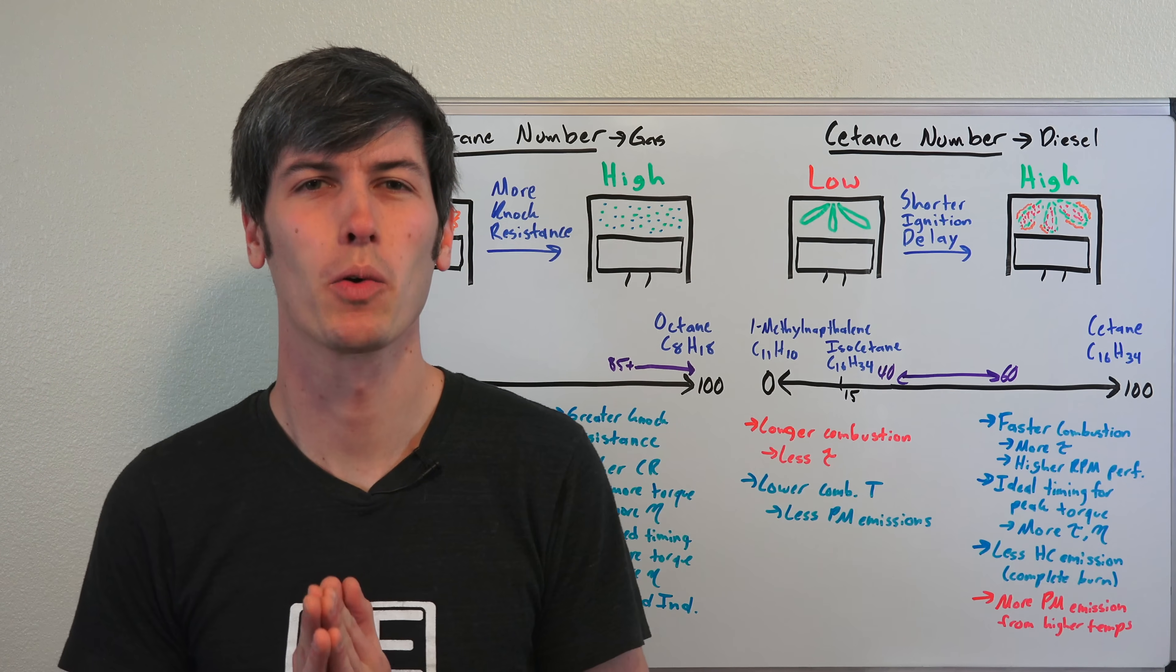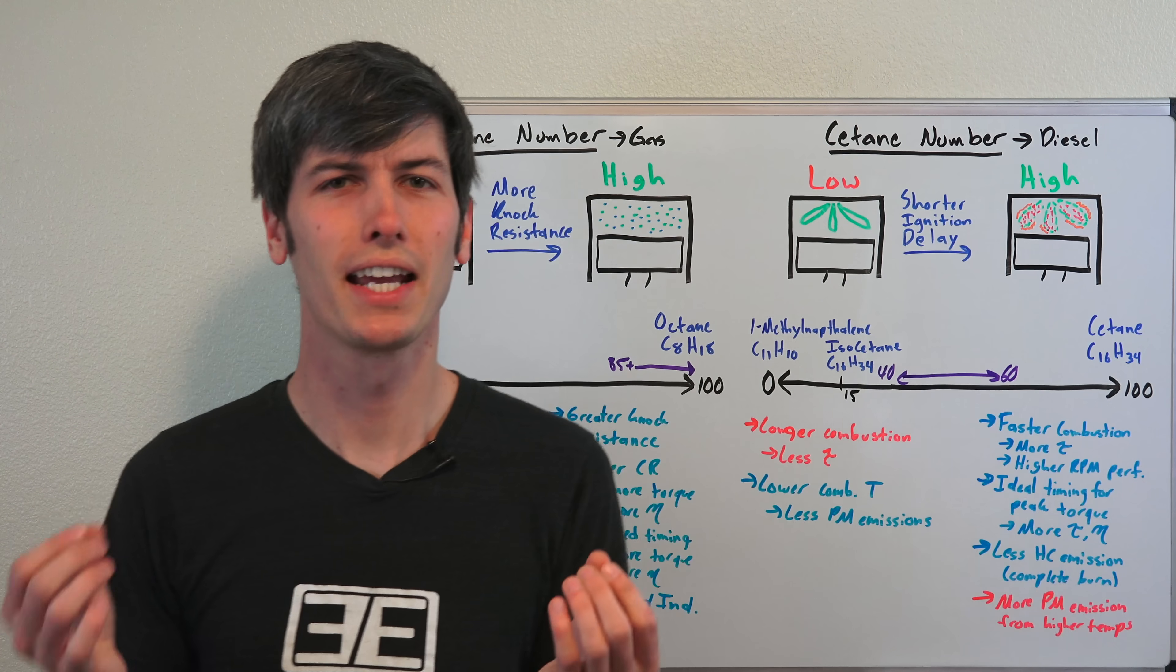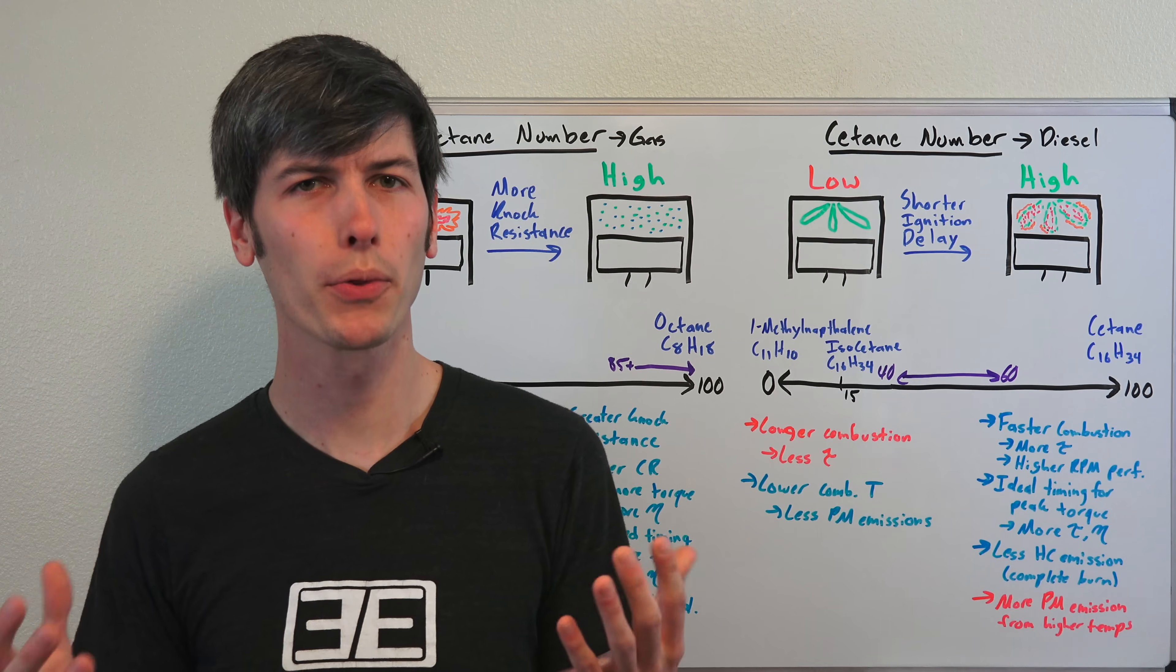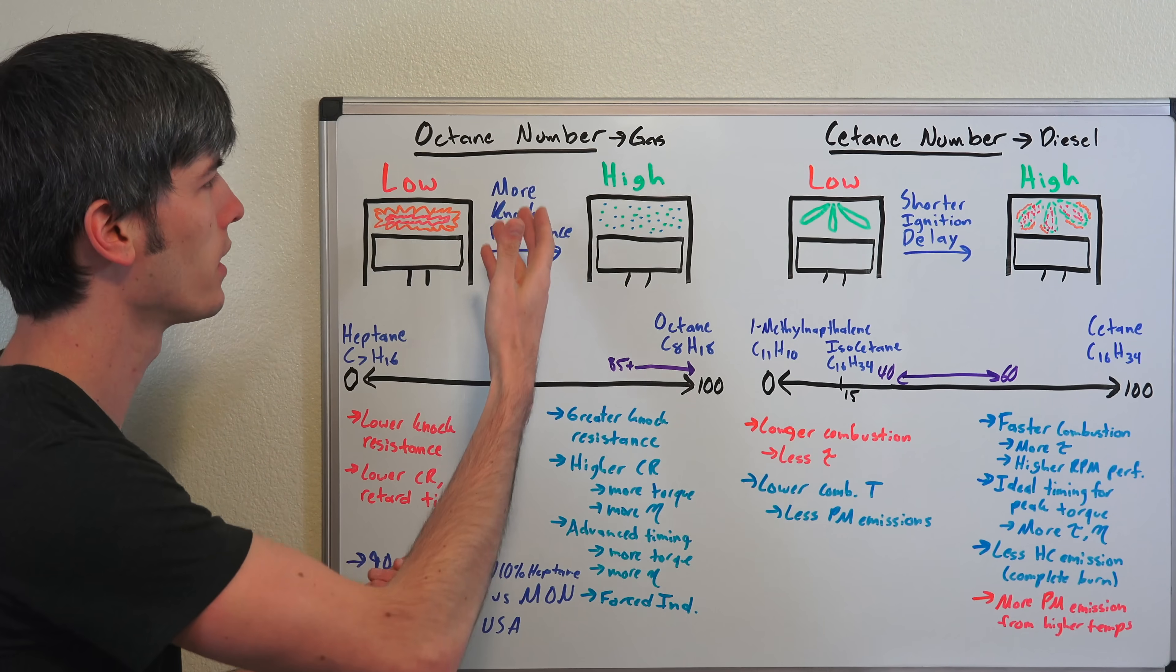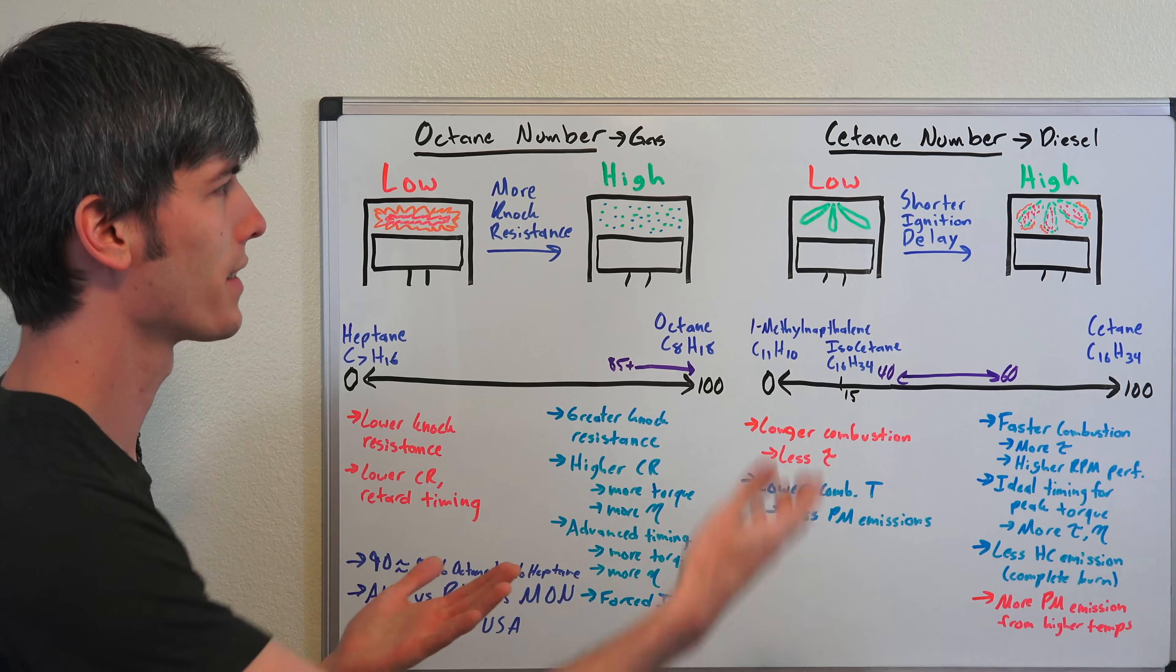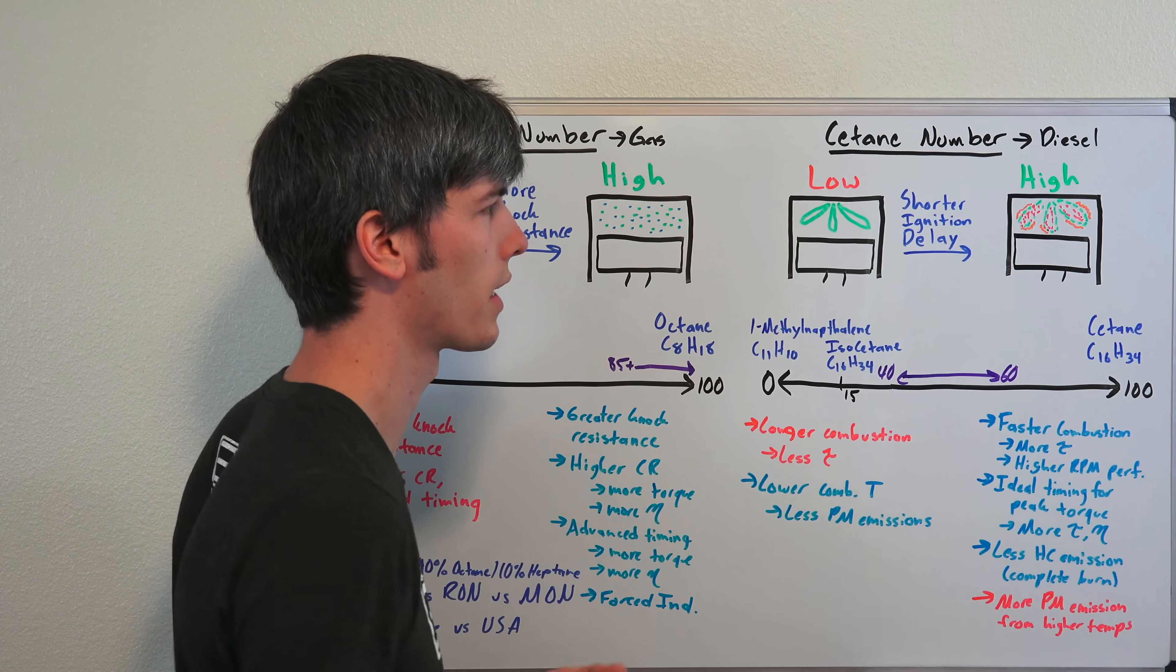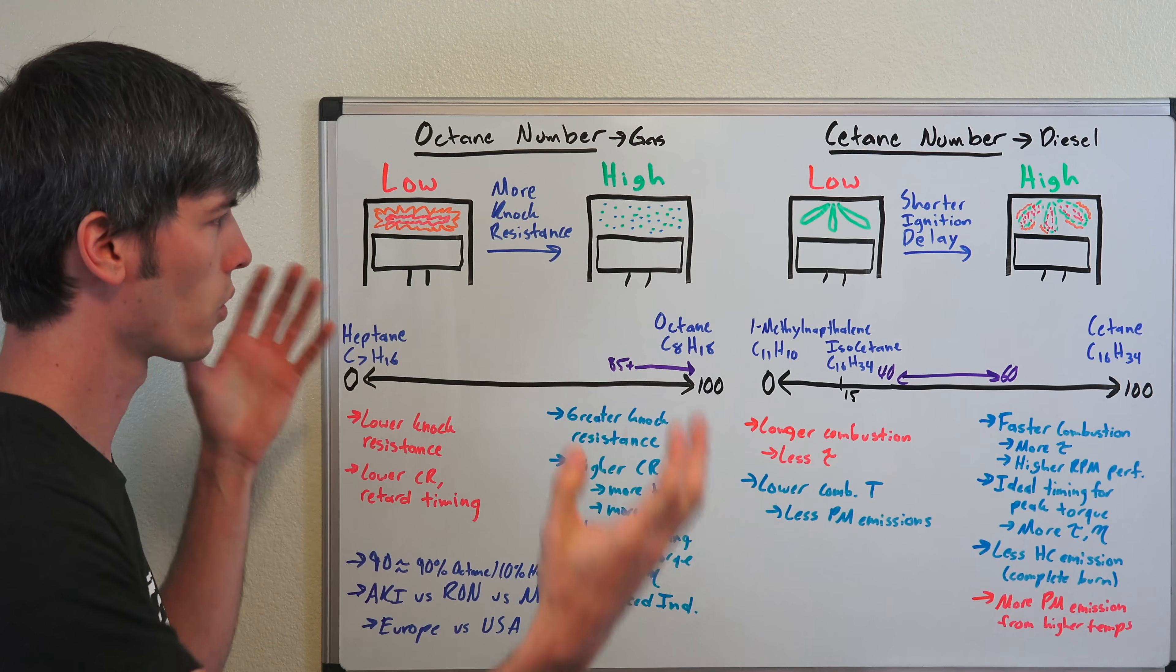Hello everyone, and welcome. In this video, we're going to be talking about the difference between octane numbers and cetane numbers, both of which are used as rating scales for fuels. Octane numbers are used as a rating scale for gasoline fuels, and cetane numbers are used as a rating scale for diesel fuels.